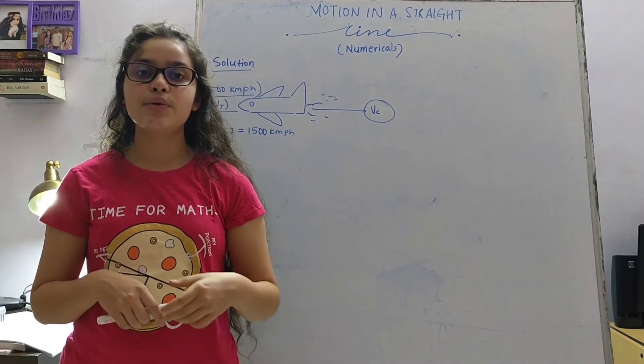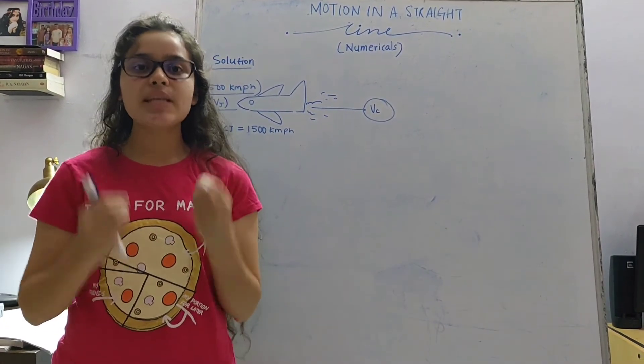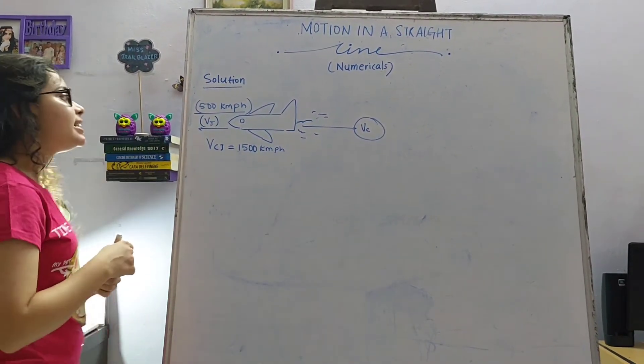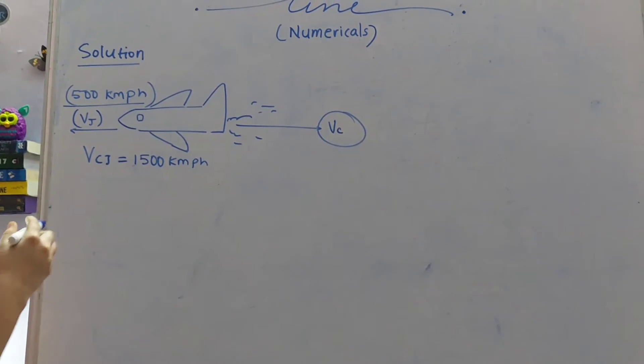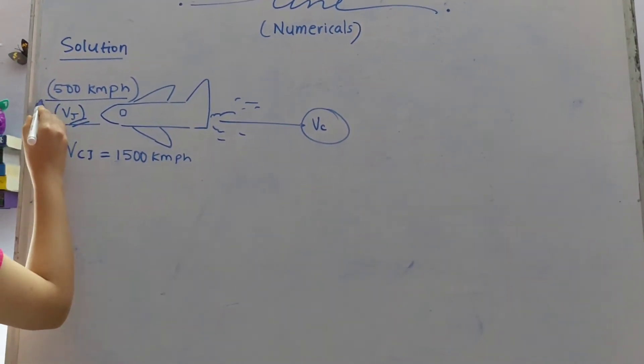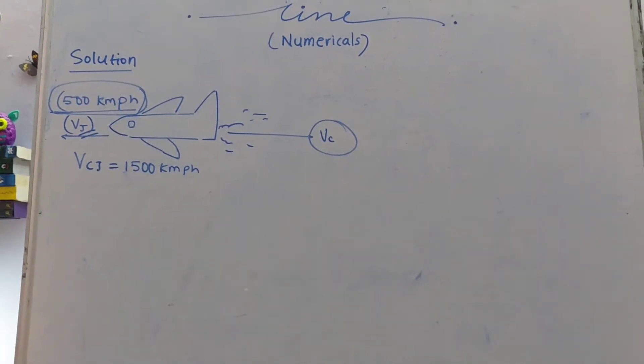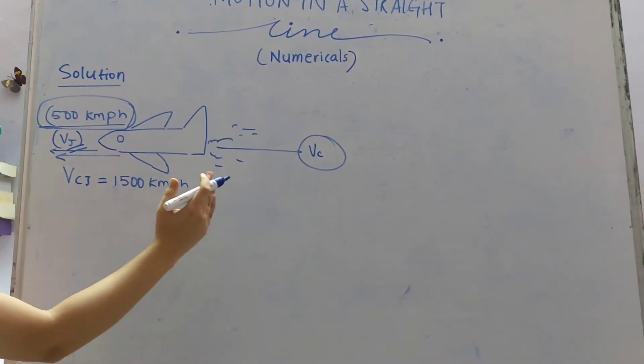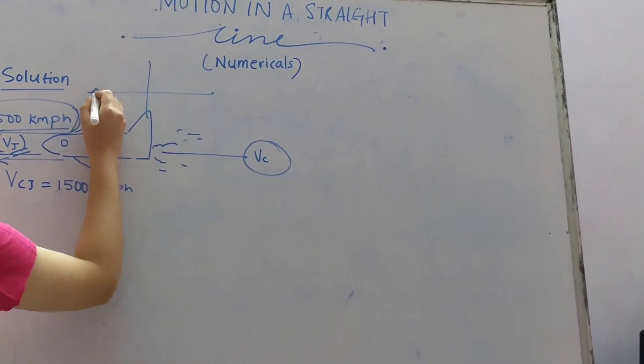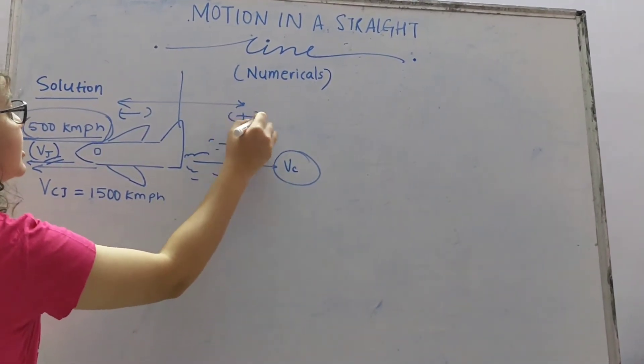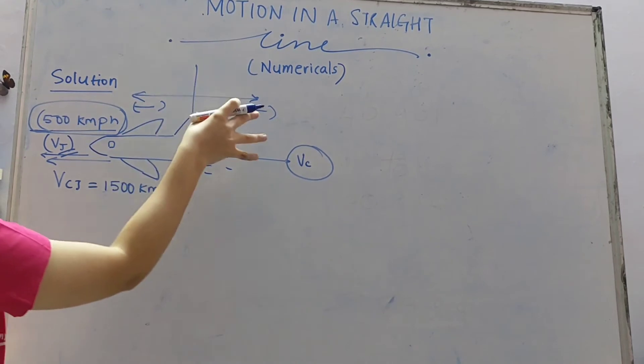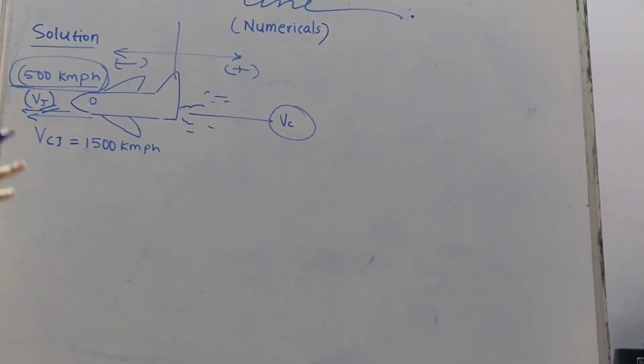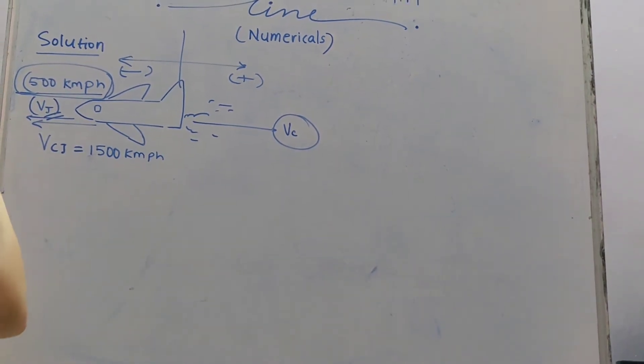I hope you have read the question properly. If you have seen my last lecture you must have understood that this question deals with relative velocity. So here velocity of jet is given as 500 km per hour and it is traveling in this direction, that is negative x direction. This is the sign convention. I have already discussed this in depth in my previous lecture.